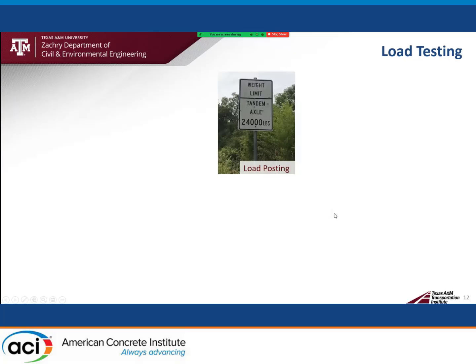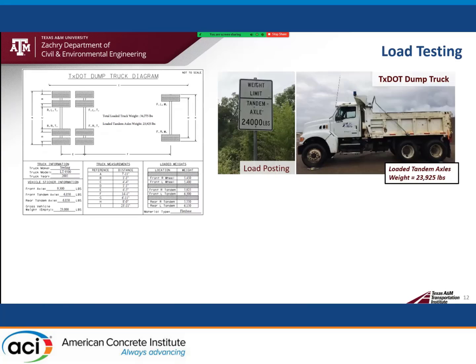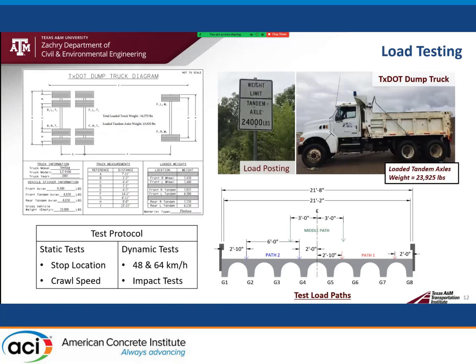Bridge CM5 was load posted for a tandem axle load of 24,000 pounds. The TxDOT dump truck used in load testing was loaded close to this limit. Three test load paths were identified for bridge CM5: path 1, path 2, and the middle path. The test protocol included both static tests and dynamic tests. Static tests included stop location and crawl speed tests, while dynamic tests were carried out at speeds of 48 and 64 km per hour.